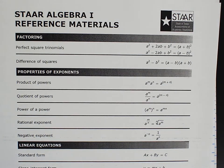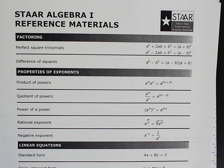This is going to be our STAAR Algebra 1 Reference Materials Brain Dump. The idea is that you come here right when you get your test, you write down all of these notes all over this paper. We'll practice it so many times that it'll come really natural. Once you have them all written down, take a couple deep breaths and then start your test. Every time you look back at your reference materials, you have all these notes here to spark your brain to help you answer all the questions. This is going to be extremely helpful for you.